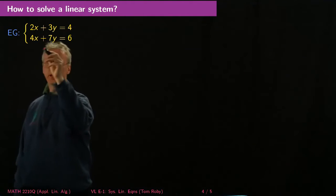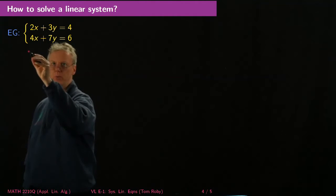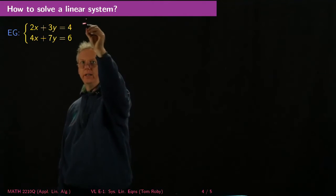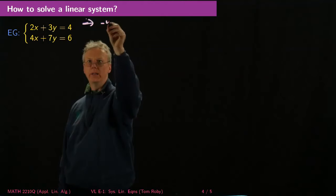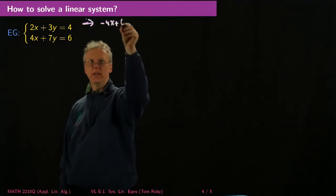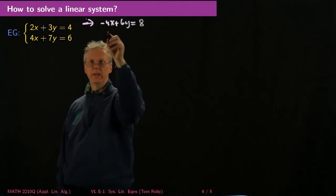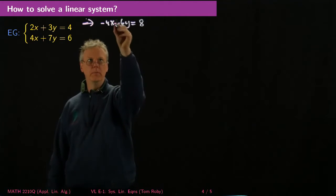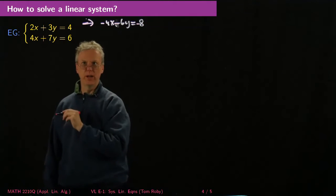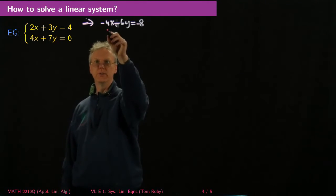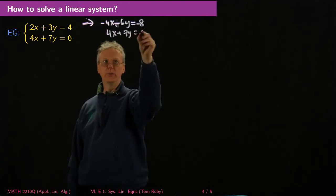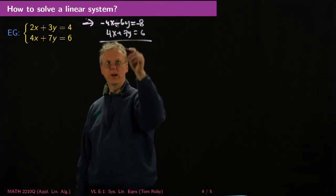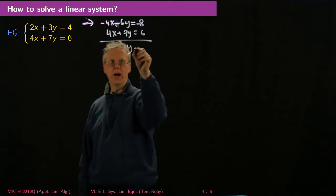So, in fact, what I can do is if I think about this first equation, 2x + 3y = 4, I can really think about that as implying that -4x - 6y = -8, right? If I multiply through by -2, that's not going to change the solution set. And then I have 4x + 7y = 6. And so if I add those guys, what do I get? Well, this becomes 0x, right? And then this just becomes y = -2.